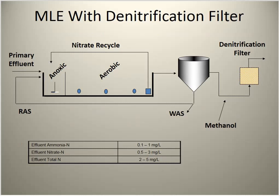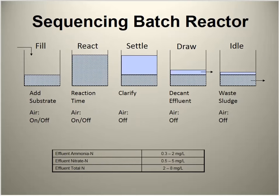The MLE with denitrification filter is a common approach in some plants — after the typical anoxic-aerobic process, a denitrification filter provides a polishing step. Methanol is added after the clarifier, and organisms living in a sand filter perform denitrification as flow passes through. Sequencing batch reactors can also be modified for nitrogen removal by adjusting their cycles — starting unaerated as the anoxic zone, releasing nitrites as nitrogen gas, then proceeding through the regular aerated process.